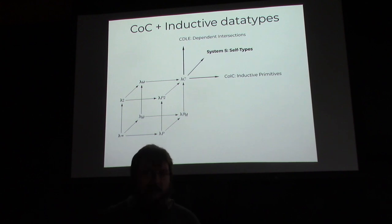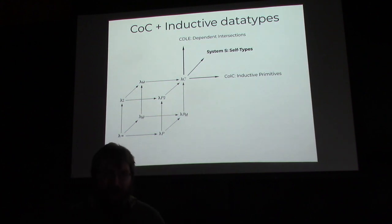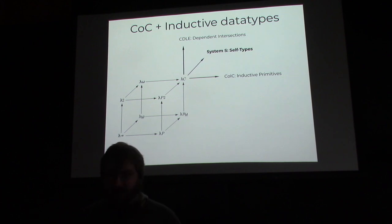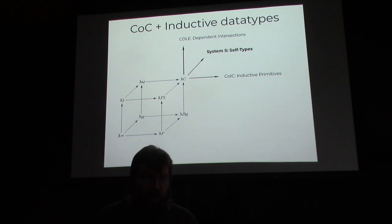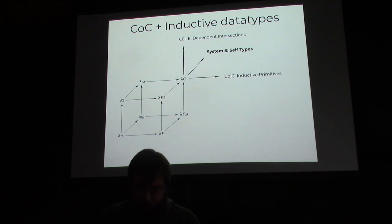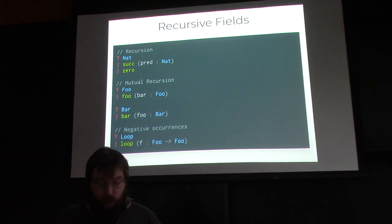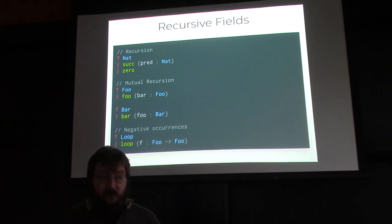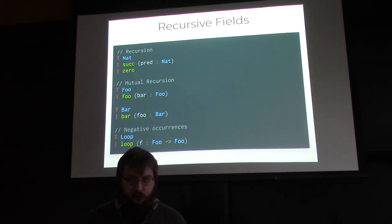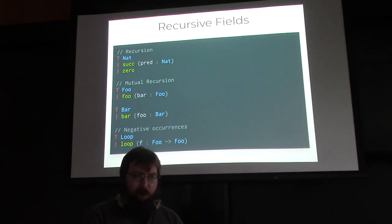Our total implementation is about two thousand lines of JavaScript — we chose JavaScript mostly because we wanted it to be portable. Everyone has a JavaScript interpreter installed, so it's really easy for us to ship, which is important since we're trying to build practical things. Our data types support recursive fields, mutual recursion — so natural numbers and foo and bar referring to each other — that works perfectly well. We can even do negative occurrences, which is cool because in languages like Agda negative occurrences can really mess you up.